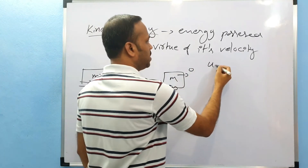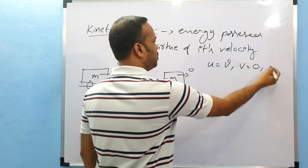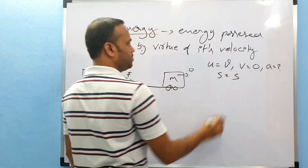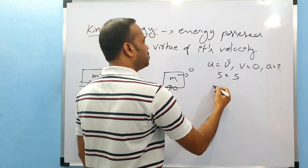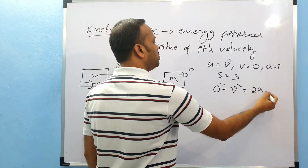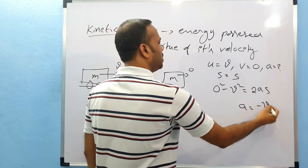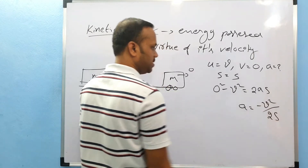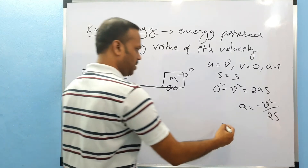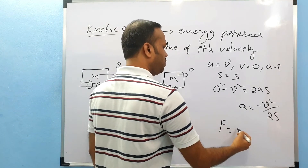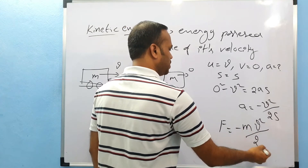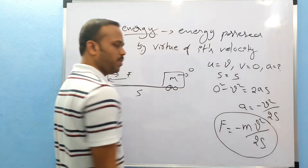Initial velocity U is equal to V. Final velocity V is equal to 0. Acceleration we do not know. Distance of travel is S. So V squared minus U squared equals 2AS: 0 minus V squared equals 2AS, so A equals minus V squared over 2S. That is the deceleration of the body. Force equals M times A equals minus MV squared over 2S.